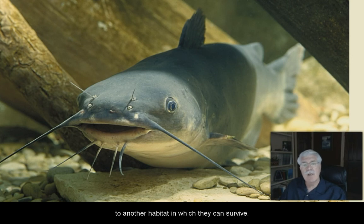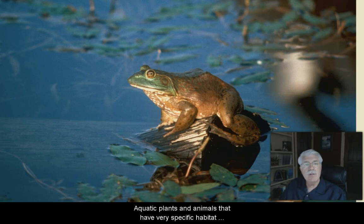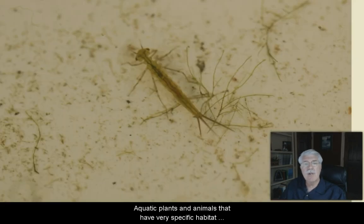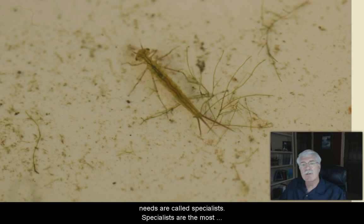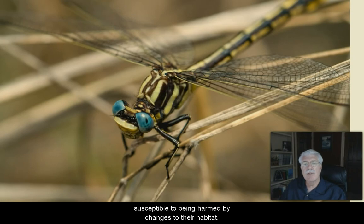Aquatic plants and animals that have very specific habitat needs are called specialists. Specialists are often the most susceptible to being harmed by changes to their habitat. These species are often unable to move or find another suitable habitat and therefore have difficulty surviving over time.